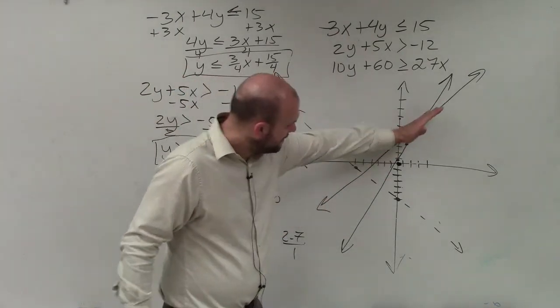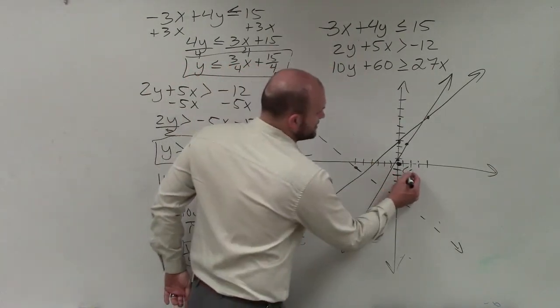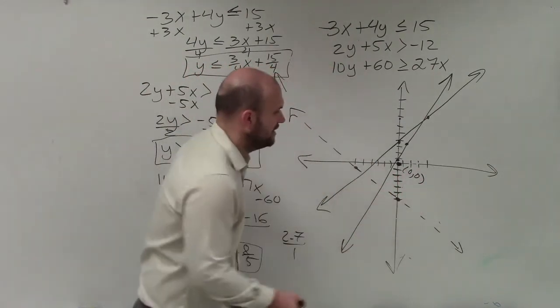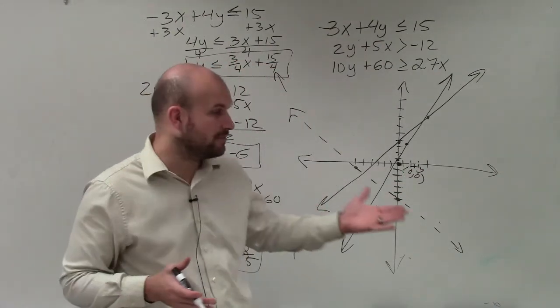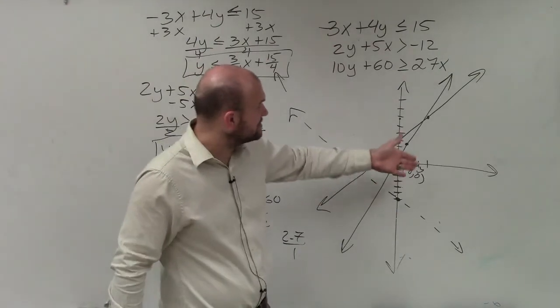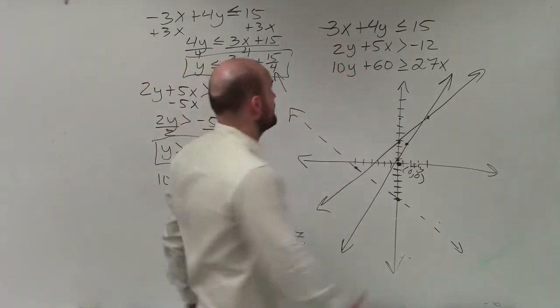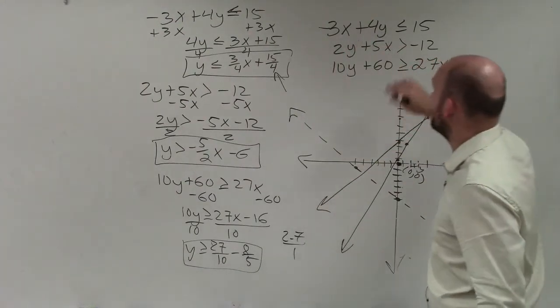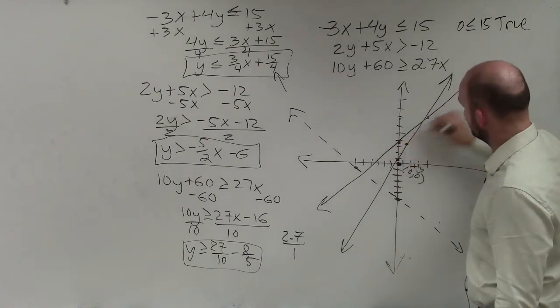So the first line that I graphed here, I'm going to want to test that. And I'm going to use my test point 0, 0. And 0, 0 is a coordinate point. It has an x and a y coordinate. So to determine to shade below or above our boundary line, we want to plug in 0, 0 for x and for y, and determine if that makes our inequality true or false. So if I plug 0 in for x and for y, I'm going to get 0 is less than or equal to 15, which is true for my first equation.